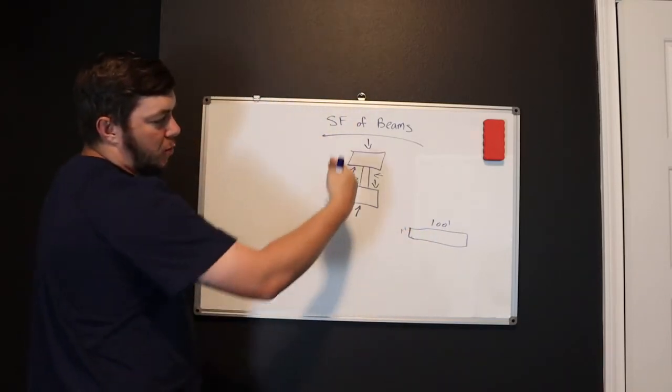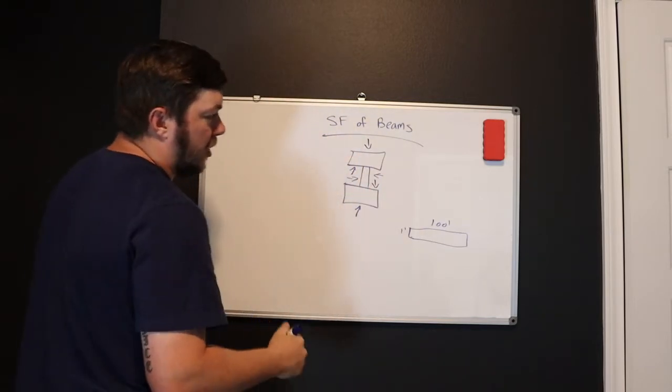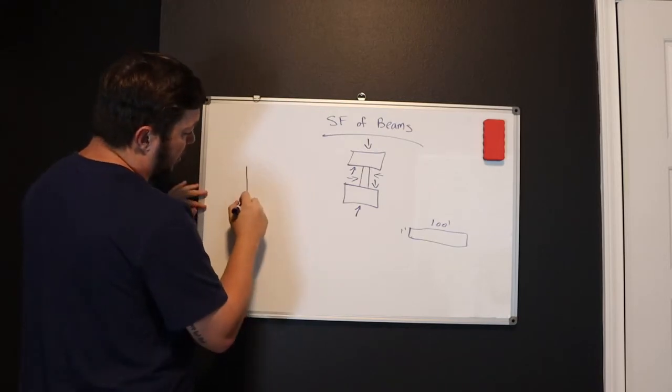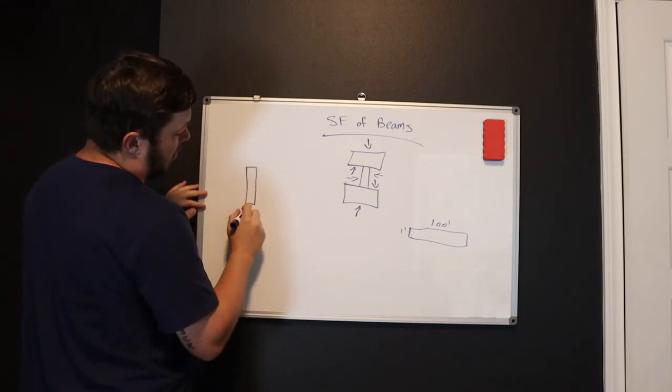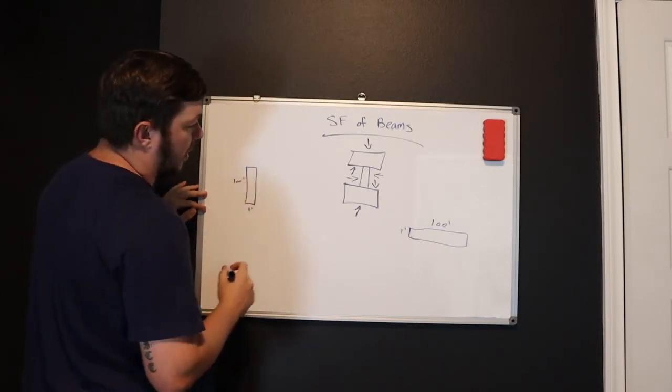And we're going to say it's one foot wide. So basically, if you were to cut an I-beam and look straight down it, this is what you would be looking at. So looking straight down on a bird's eye view.